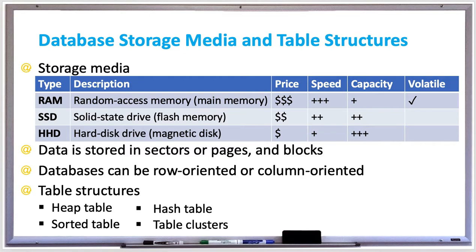A sector is a physical track or slice on a disk that holds data, and it's typically 512 bytes per sector, or up to 4 kilobytes with newer disk formats. Data is grouped in pages with SSD flash memory, and it's typically between 2 to 16 kilobytes per page. A block is a uniform size of data used by both databases and file systems when transferring data between main memory and storage media, and it's typically 2 to 64 kilobytes.